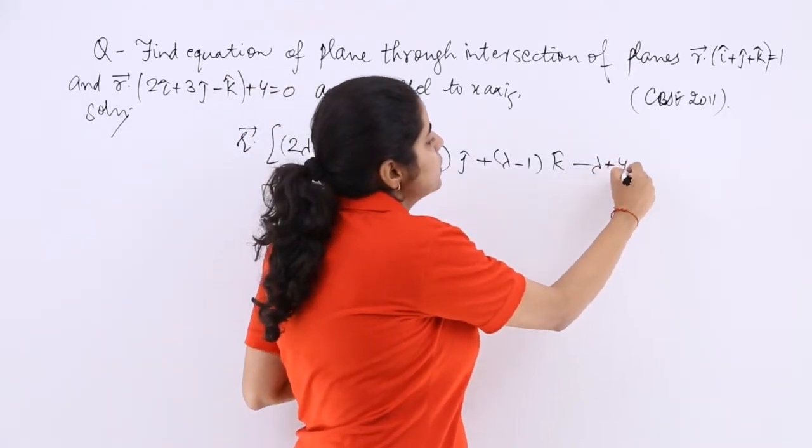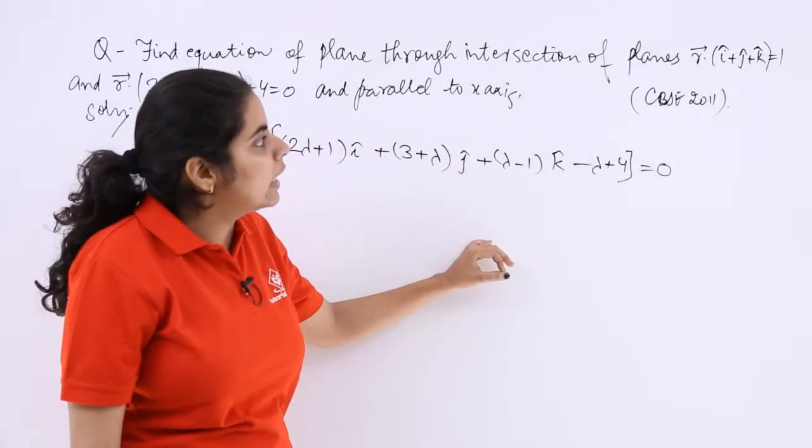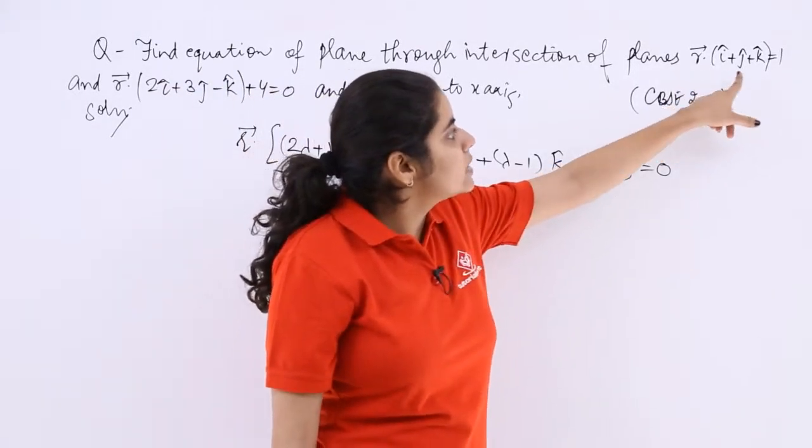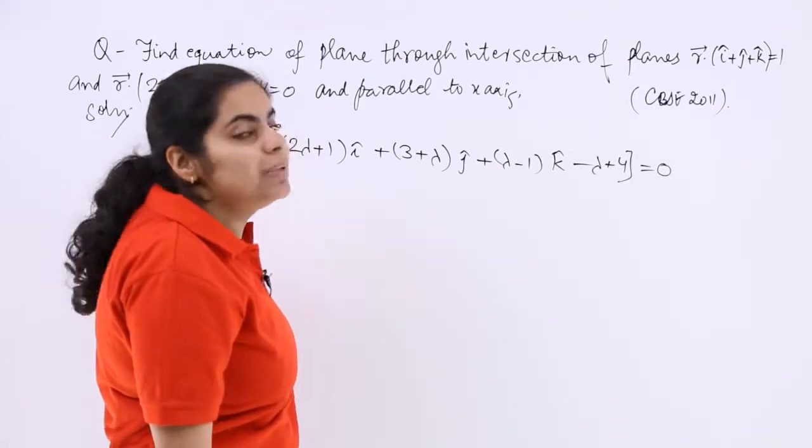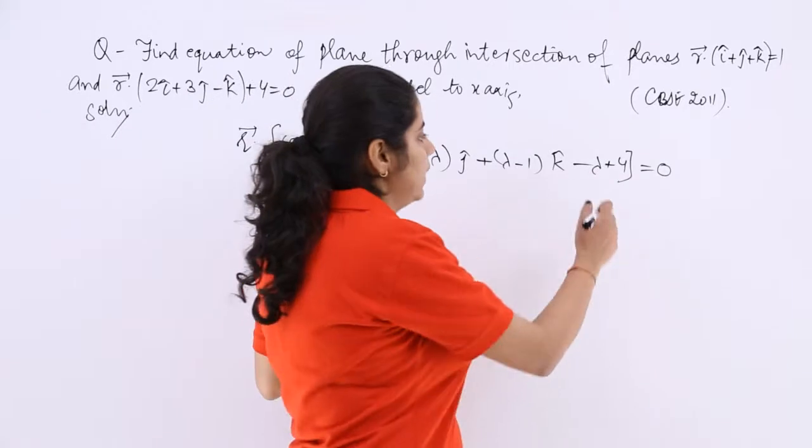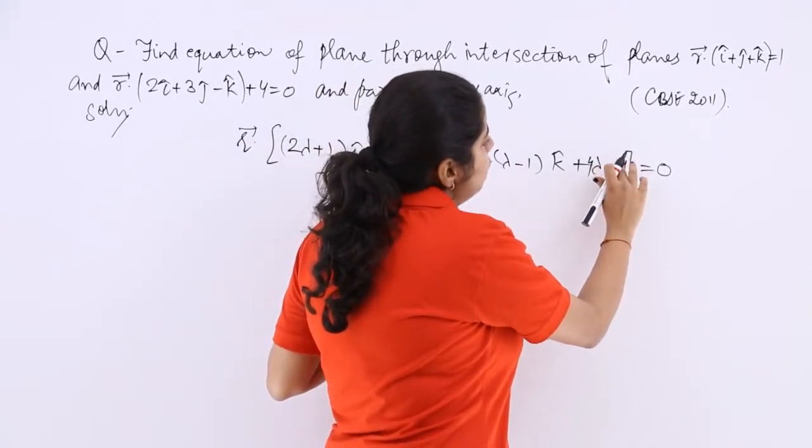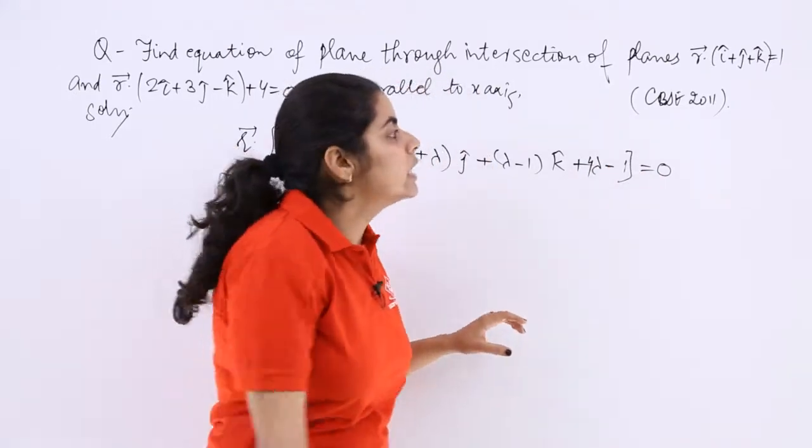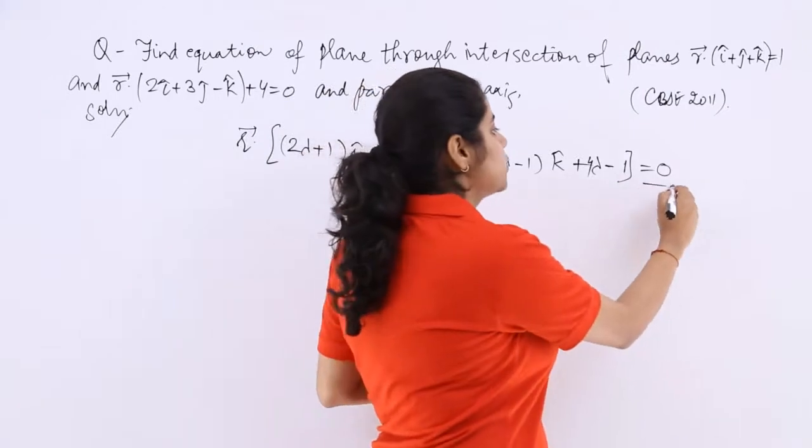Then you have plus 4 and there it is minus 1, so that will be minus lambda plus 4 equals 0. We have to take care that lambda will be associated with the second equation, so here it will be plus 4 lambda and here it will be minus 1 because this is the first equation. Now let's name this as equation number 1.